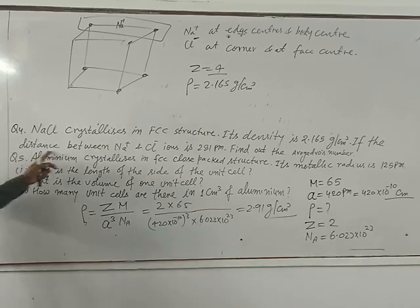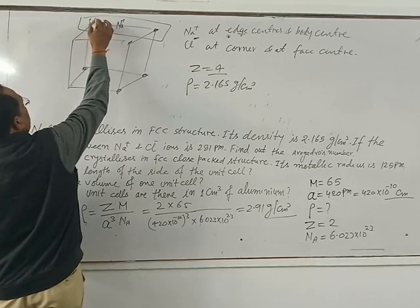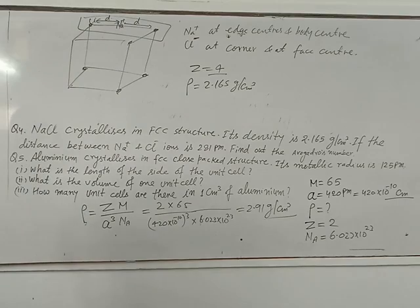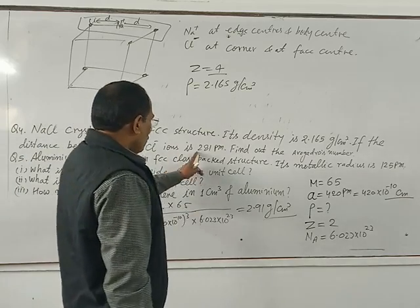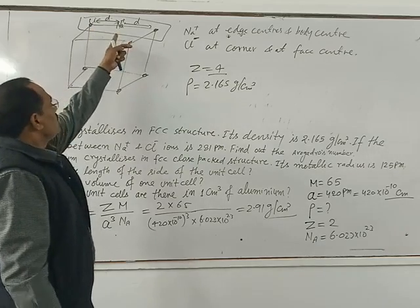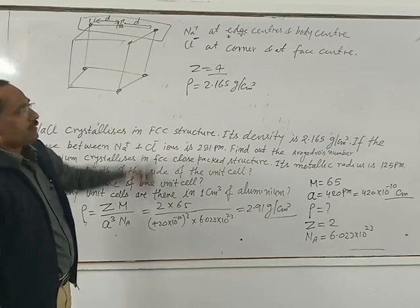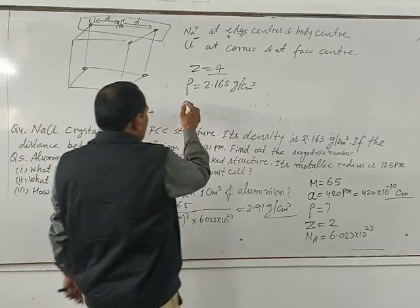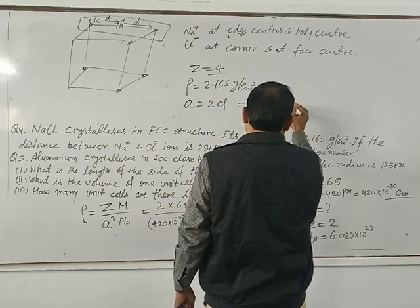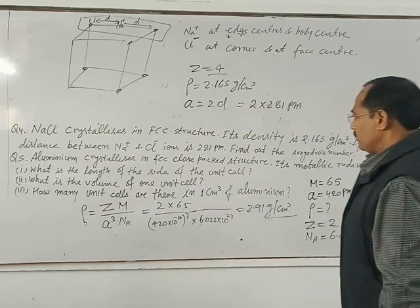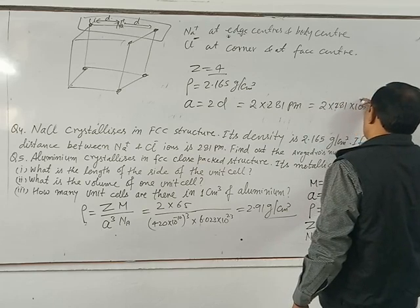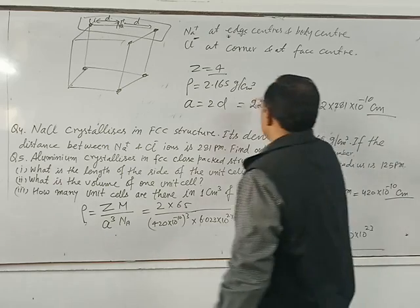The distance between sodium and chloride ions is 281 picometers. The edge length A is just double the distance between the ions, so A equals 2d, which means A equals 2 times 281 picometers, equal to 2 times 281 times 10 to the power minus 10 centimeters.